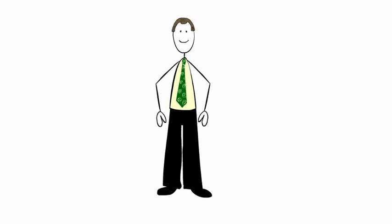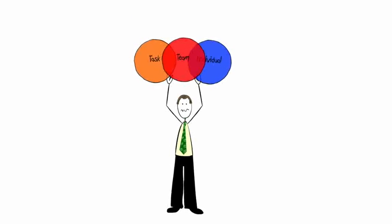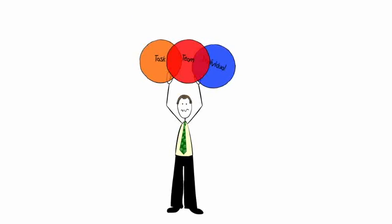The leader, let's call him John of course, has to balance the three elements all at the same time. Because if one is ignored, the others are certainly unlikely to succeed.